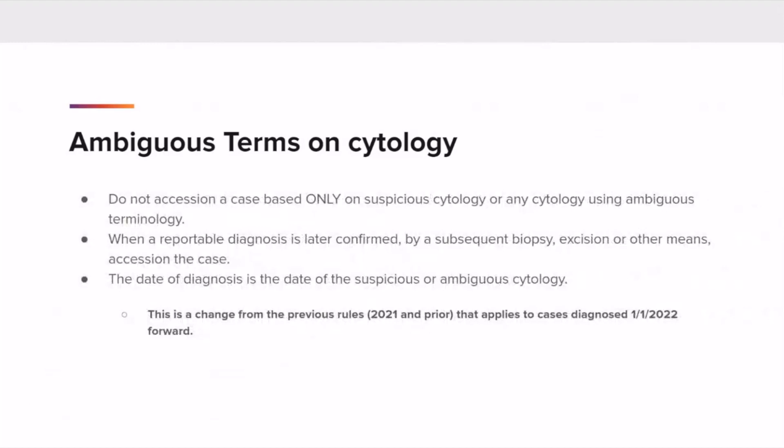The use of ambiguous terms on cytology can be a little nuanced. SEER and STORE instruct us not to assess in a case based only on suspicious cytology or any cytology using ambiguous terminology — further information or confirmation is needed to make this a reportable case. When a reportable diagnosis is later confirmed by subsequent biopsy, excision, or other means, assess in the case. When this situation occurs, the date of diagnosis is the date of the suspicious or ambiguous cytology. This is a change from the previous rules for 2021 and prior, and this change applies to cases diagnosed 1-1-2022 and forward.